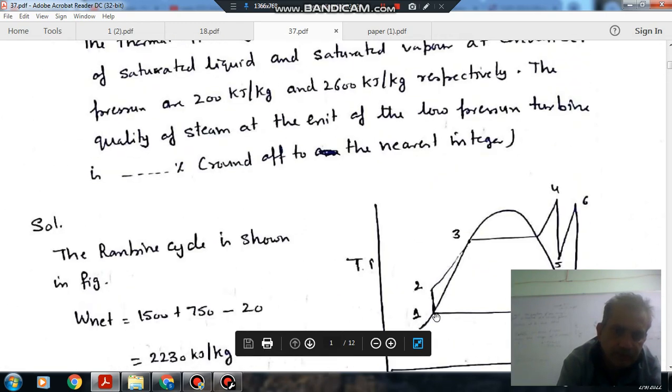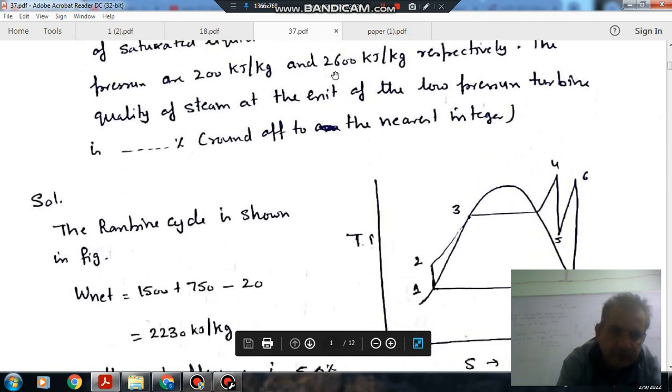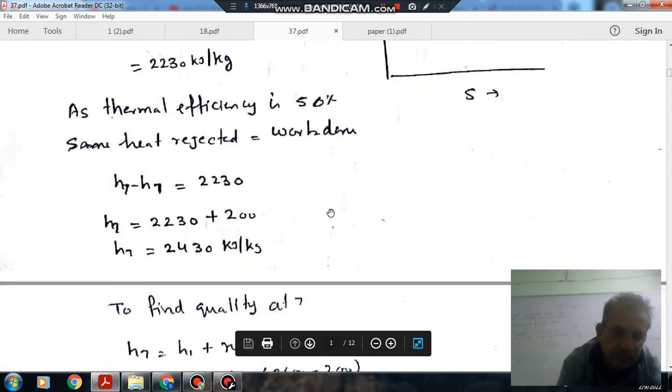This enthalpy H1 is given as 200. The saturated liquid enthalpy is given as 200 and the enthalpy H7 dash is also given as 2600. So we can calculate the quality of the steam.